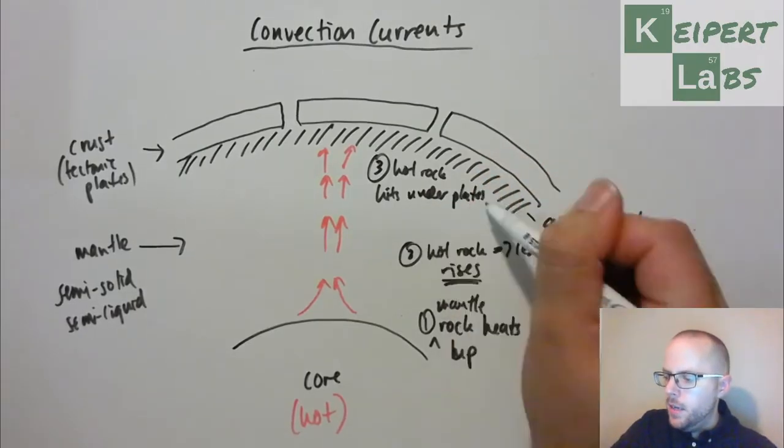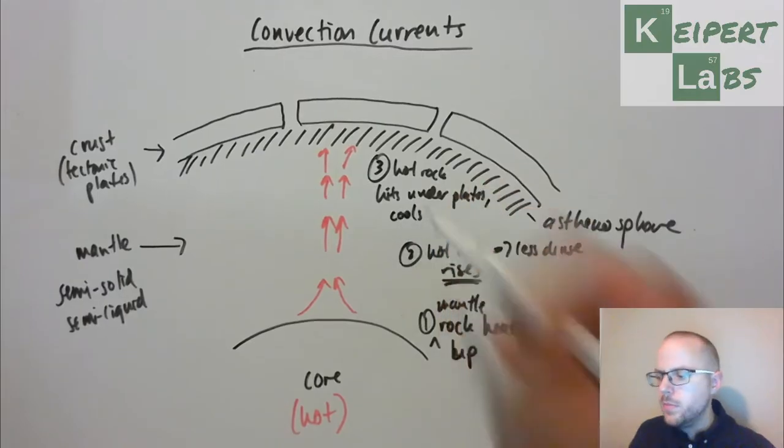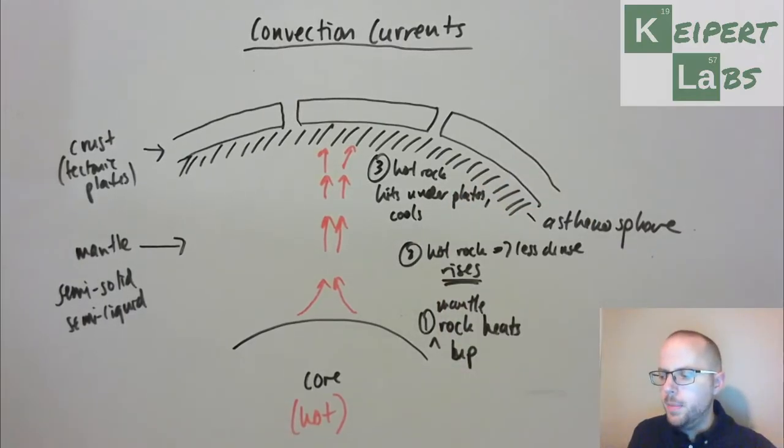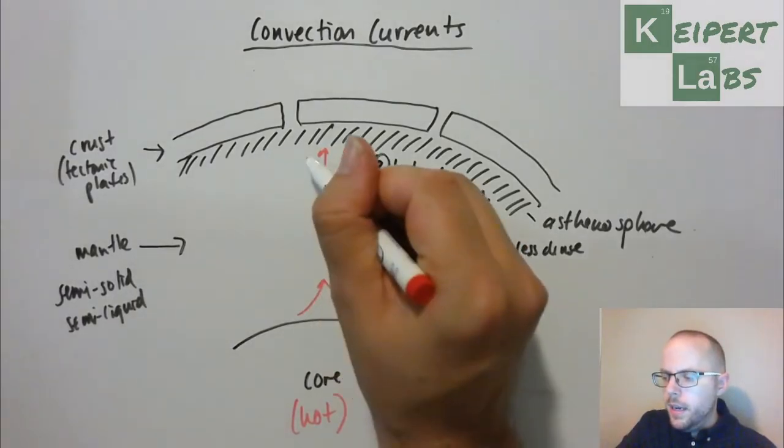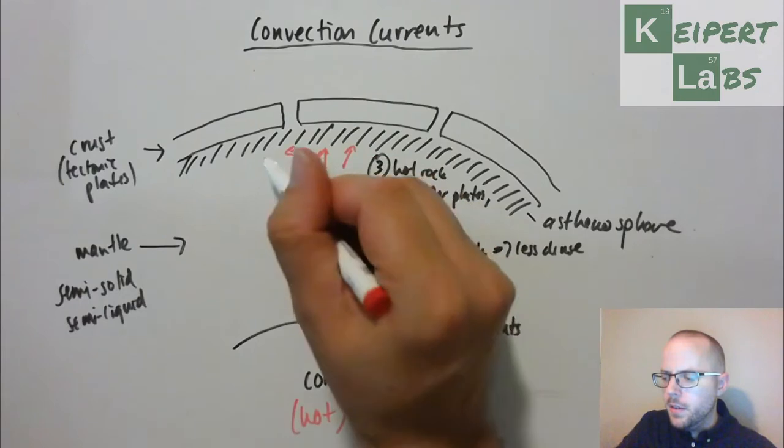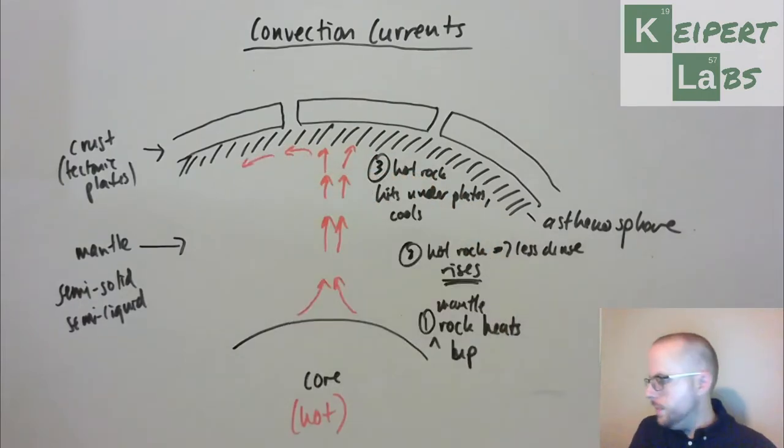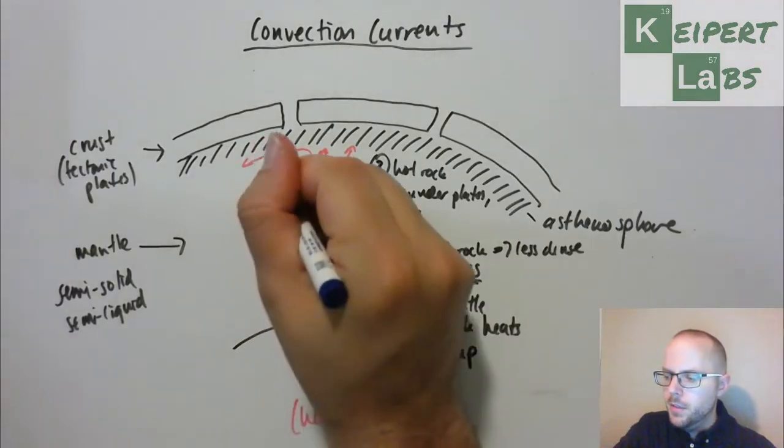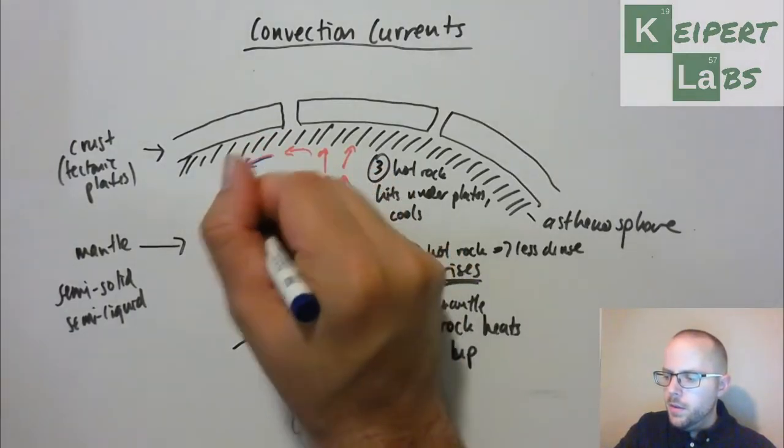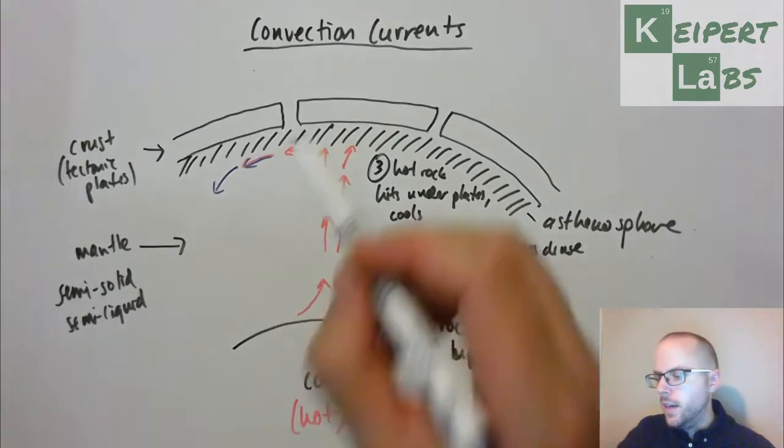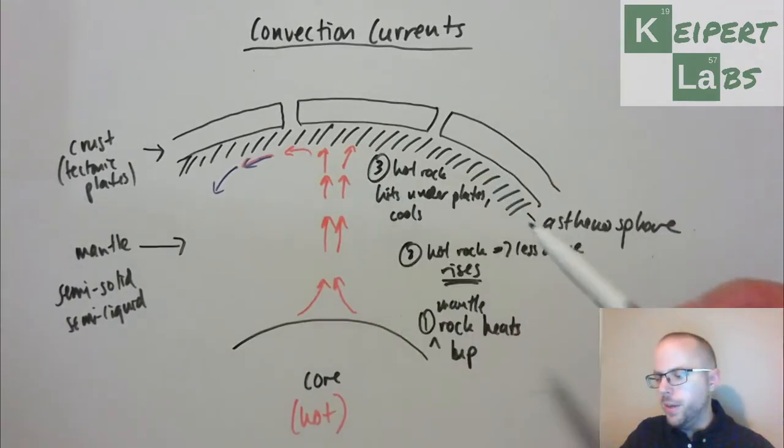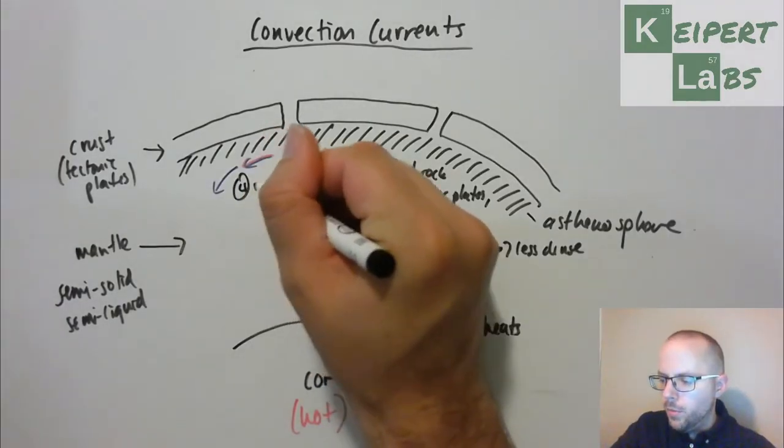And it cools. So what happens is that as it's up here, it's not as close to the hot core anymore. It gets up here and it starts to get colder. And now, this is a slight exaggeration, but I'm going to use some blue over here. Then what happens is that the rock cools.